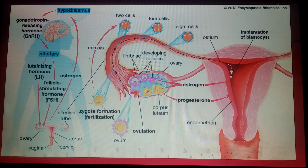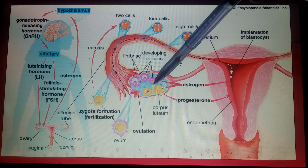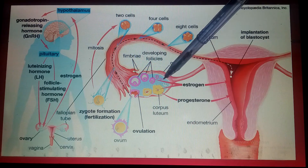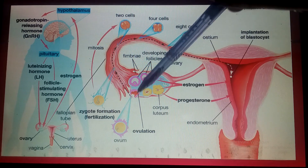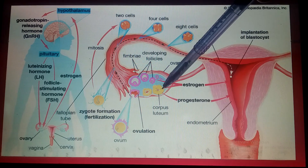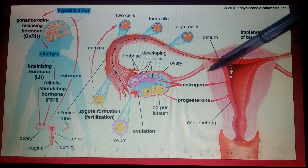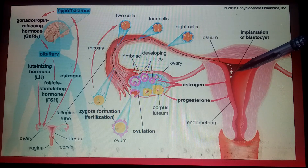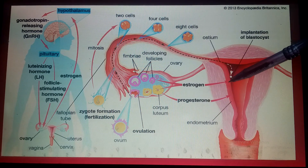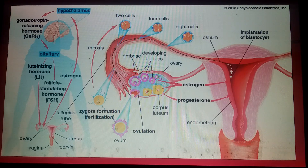You can see here how progesterone is produced — this is the corpus luteum. During ovulation, when the egg releases, the corpus luteum acts like a gland and produces progesterone. This progesterone helps in the development of the endometrium and in the implantation of the embryo. Estrogen and progesterone together help in maintaining the pregnancy, and I will discuss this in detail in my next lecture.